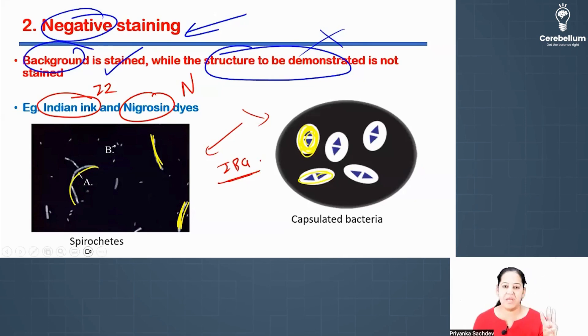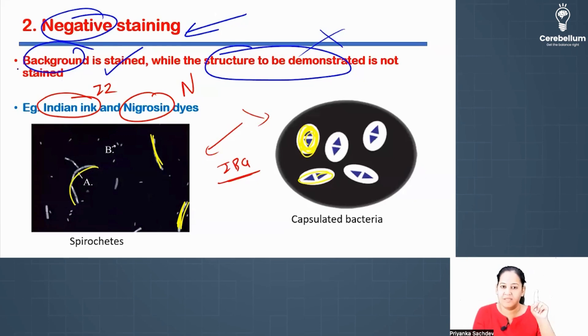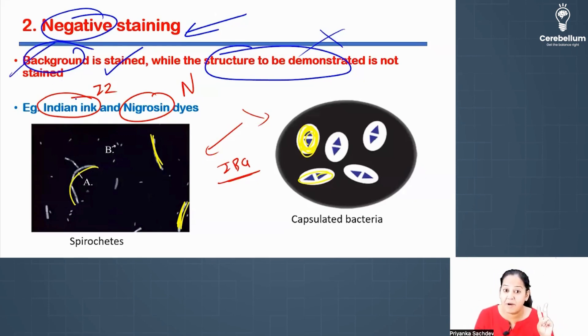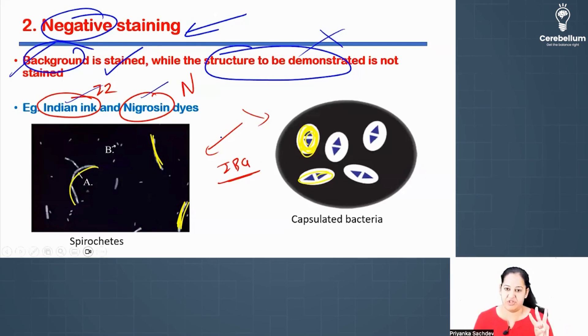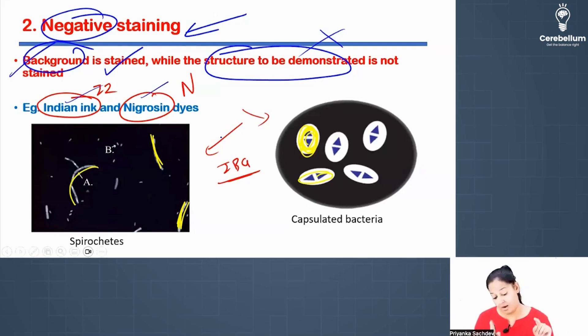Again, three questions can come from this page. Number one: definition — what is negative stain? Number two: examples — which of the following is an example of negative stain? Number three: image-based question. So you can get many questions from this page.